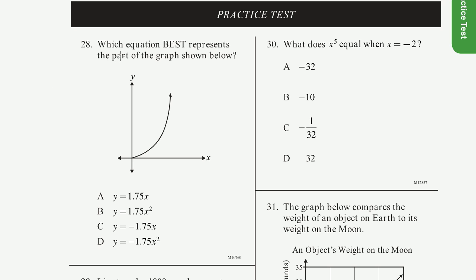Problem 28: Which equation best represents the part of the graph shown? We have a bunch of equations here. This one is just a linear equation — some number times x — so that graph would be a straight line.